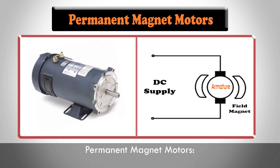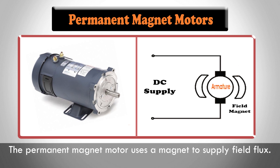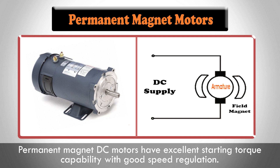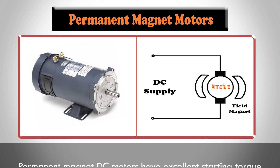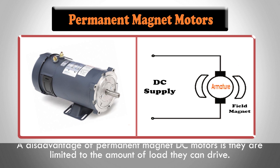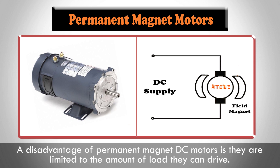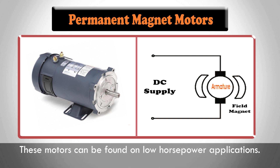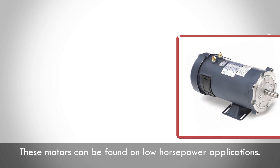Permanent magnet motors. The permanent magnet motor uses a magnet to supply field flux. Permanent magnet DC motors have excellent starting torque capability with good speed regulation. A disadvantage is that they are limited in the amount of load they can drive. These motors can be found in low horsepower applications.